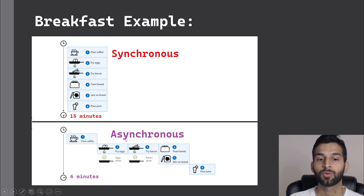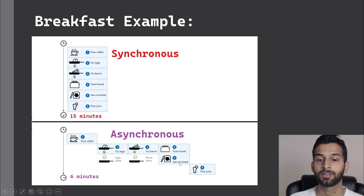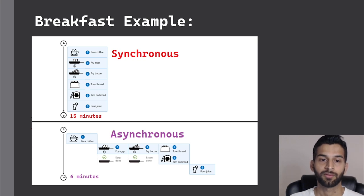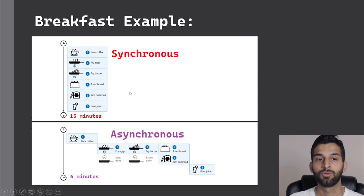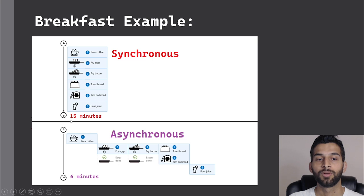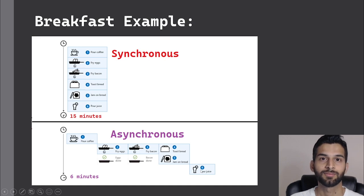In the diagram, pouring coffee, frying eggs, frying bacon, and toasting bread are all performed at the same time to save time. Then once the toast is done, I put jam on it and pour juice to finish breakfast. Let's use this in a console application and see how async and await keywords can run the program asynchronously. Currently it takes 15 seconds — I display it as minutes to make sense of the demo — and we'll try to drop it down to six seconds.